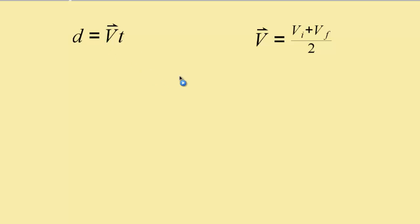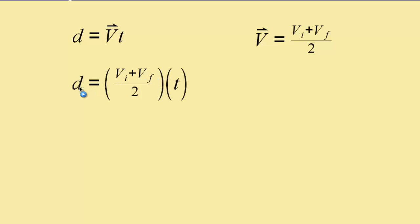From an earlier kinematic equation, we said that average velocity was initial velocity plus final velocity divided by 2. So what I'm going to do next is substitute this expression for average velocity. Displacement equals initial velocity plus final velocity divided by 2, times time — substituting that velocity symbol for this equivalent expression.